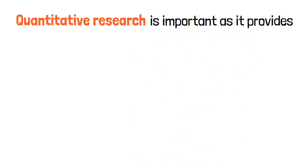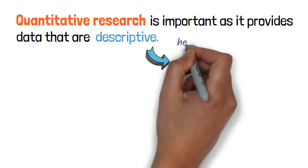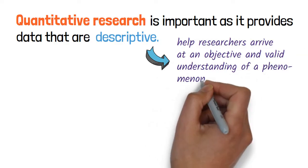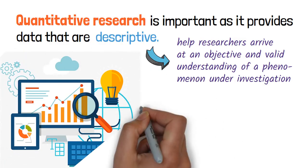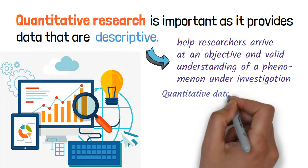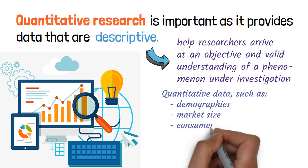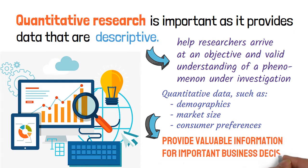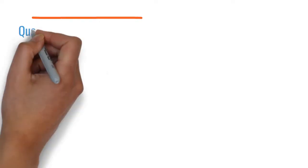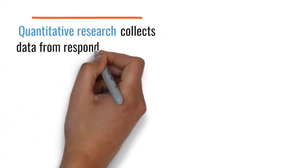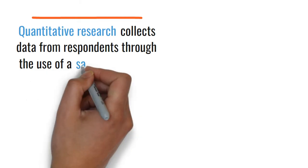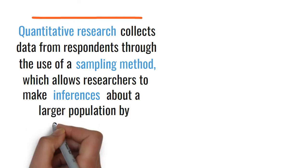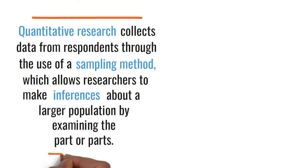Quantitative research is important as it provides data that are descriptive, which help researchers arrive at an objective and valid understanding of a phenomenon under investigation. For instance, quantitative data such as demographics, market size, and consumer preferences provide valuable information for important business decisions. Quantitative research collects data from respondents through the use of a sampling method, which allows researchers to make inferences about a larger population by examining the part or parts.